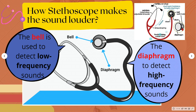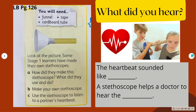You can make your own stethoscope using these materials: a funnel, a cardboard tube like the one from your kitchen towel or aluminum foil, and tape. Put these together and use your stethoscope to listen to a partner's heartbeat. The flat surface of the diaphragm is connected with a tube that is directed to the ear of the stethoscope.